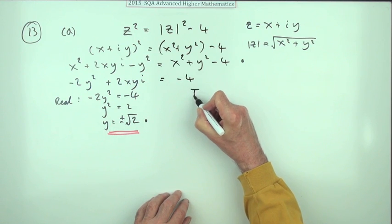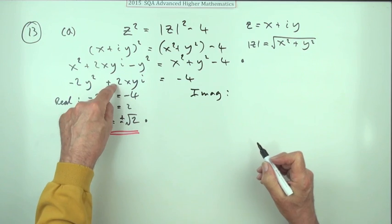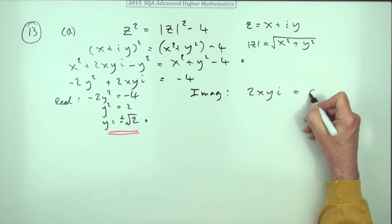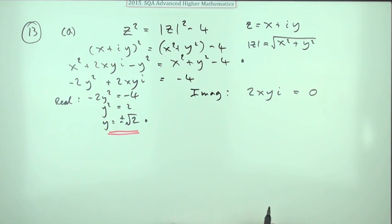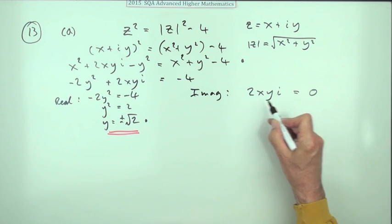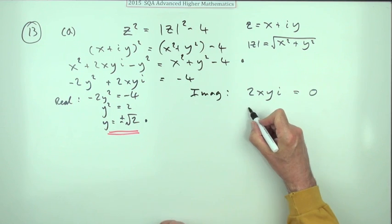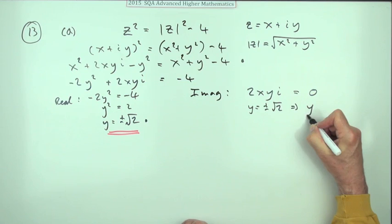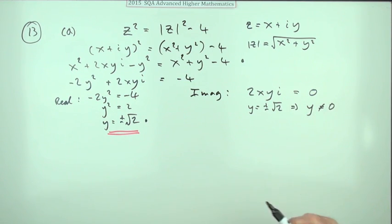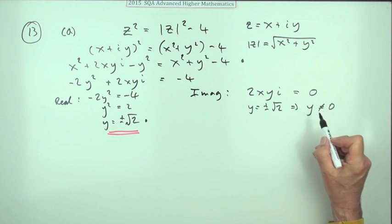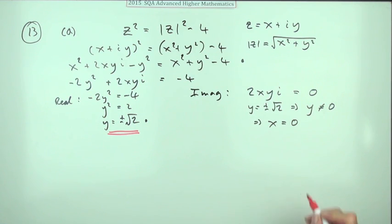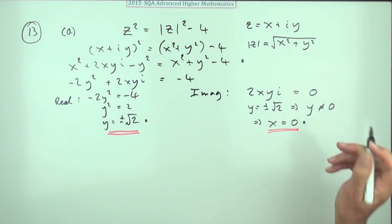Getting down to equating the real and imaginary parts was the second mark. The imaginary part should equal zero, so 2xy equals zero. The next mark is for finding x. If that product equals zero and y equals plus or minus root 2 — meaning y is not zero — then the only thing left that could be zero is x. So x must equal zero. That was the third mark.